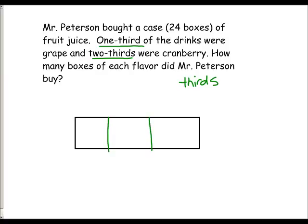Once that is done, we have to pull out the facts. We know that there are 24 boxes of juice. Now that we know there are 24 boxes and they are cut in thirds, we need to take the 24 and sort them into the three groups.